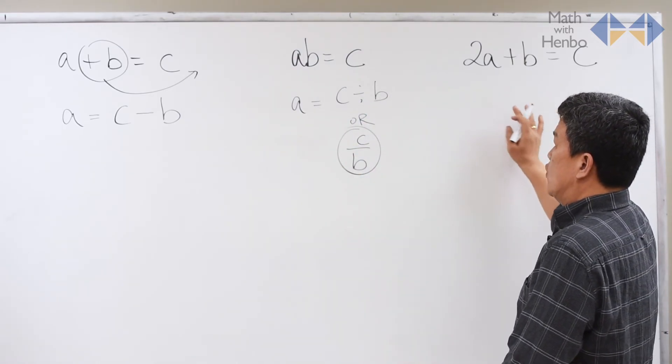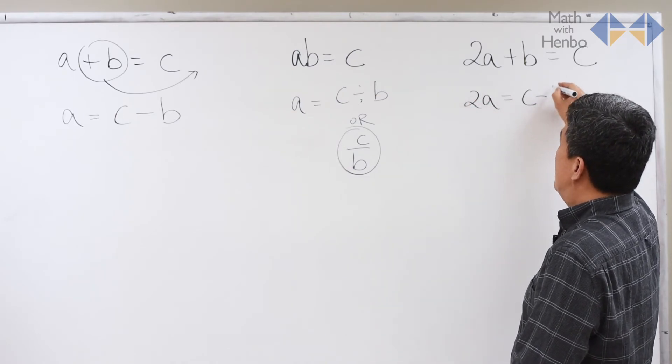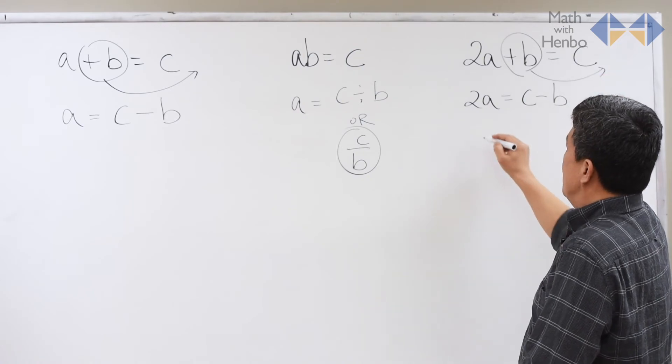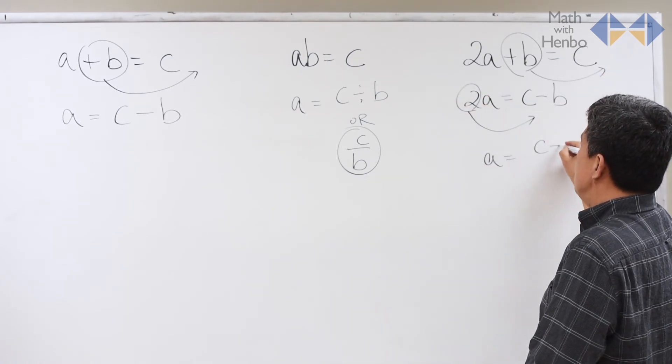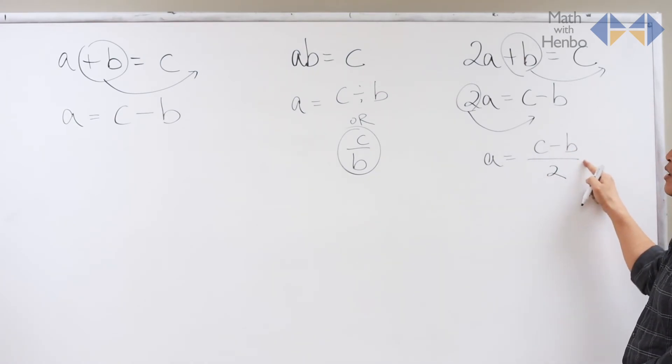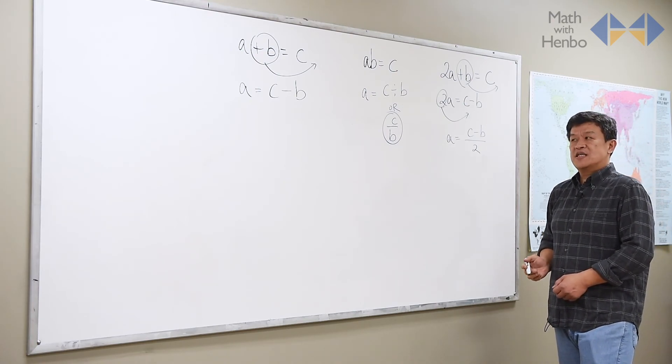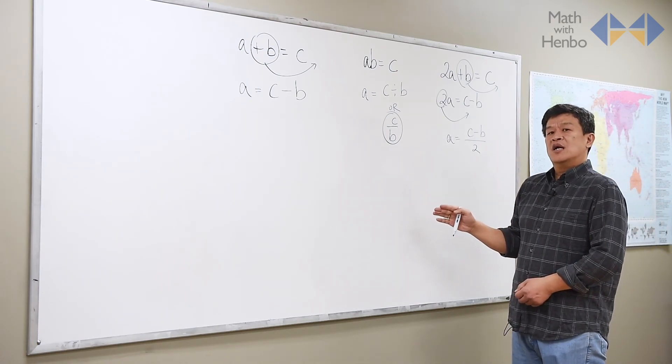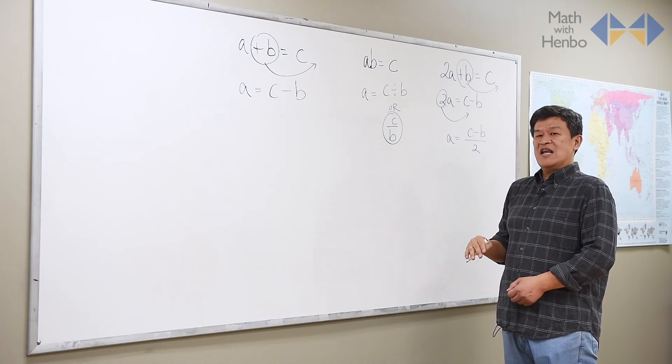For the third one where there's a combination, 2A equals C minus B. So take the B across. And now take the 2 across. A equals C minus B over 2. This is a division. That's why I put it as a fractional form. And this is basically how to come up with a formula when you are not, or an equation when you are not given any variable.